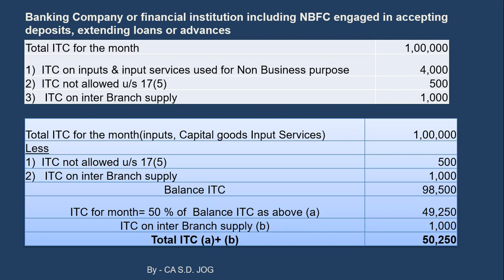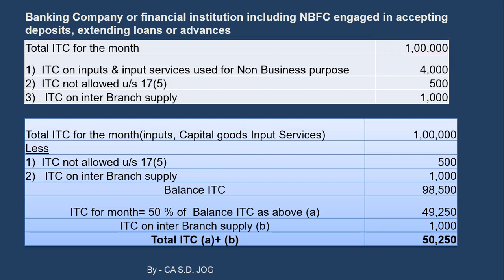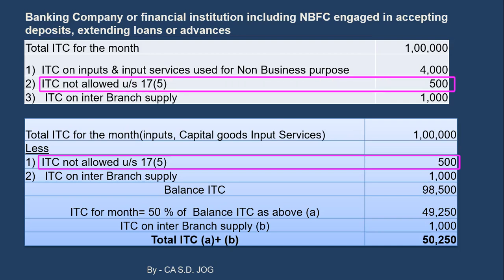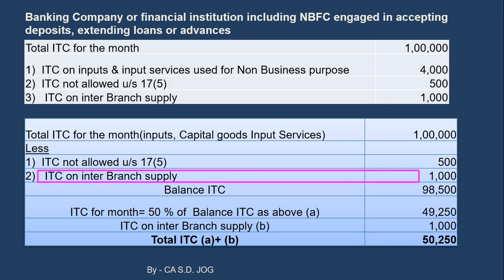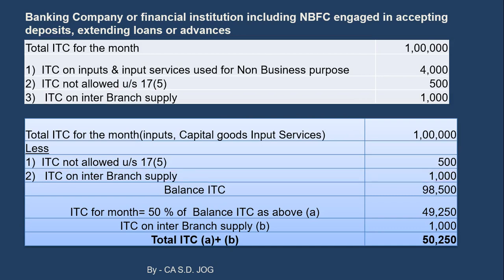If this bank goes for the second option, the calculation is as follows. Starting point: total ITC for the period including inputs, capital goods and input services is ₹1 lakh. From this, deduct ITC not allowed under section 17(5) — that is ₹500 — and ITC on inter-branch supply — that is ₹1,000. Both amounts are reduced from ₹1 lakh, giving a balance ITC of ₹98,500.